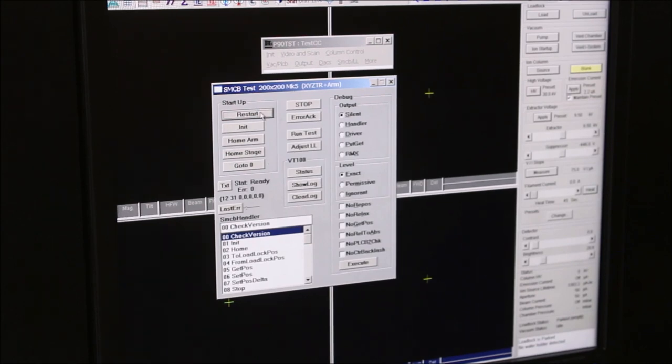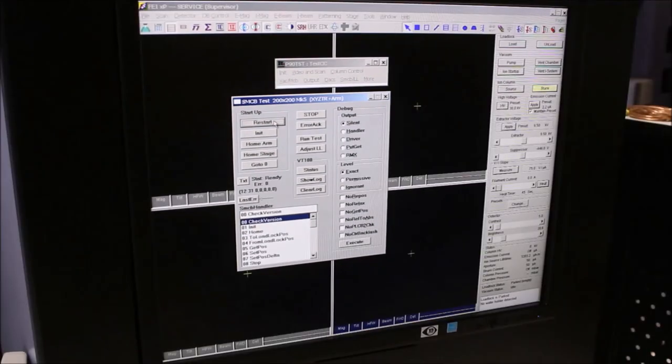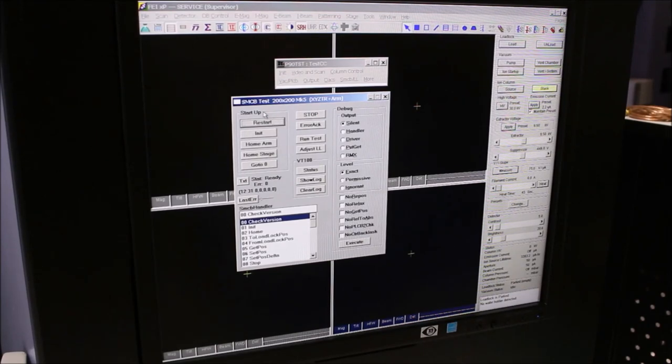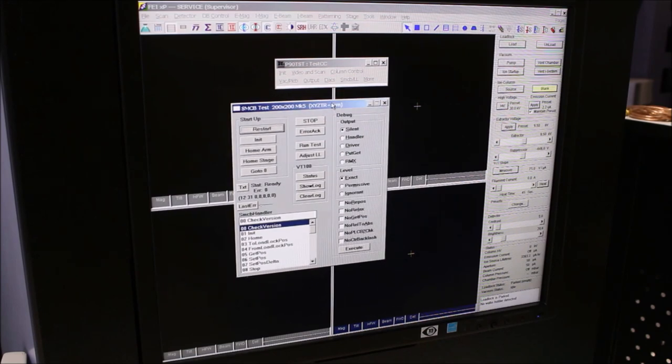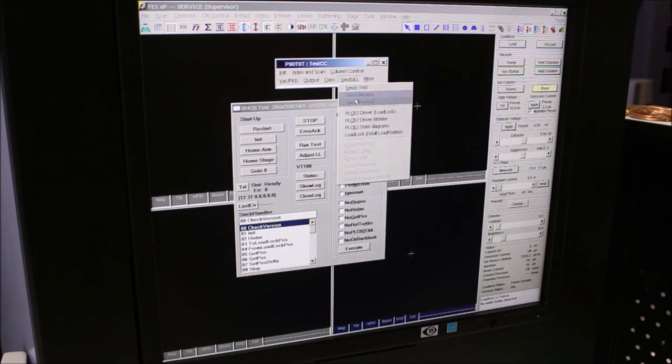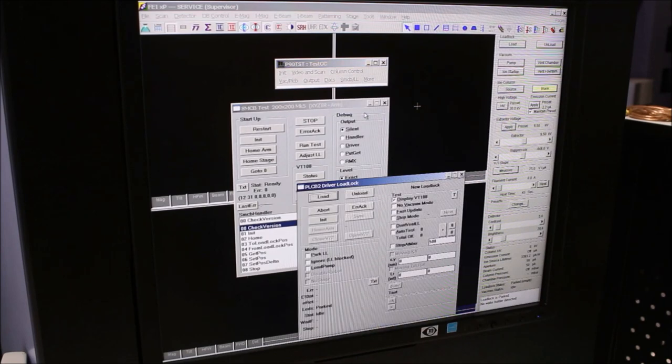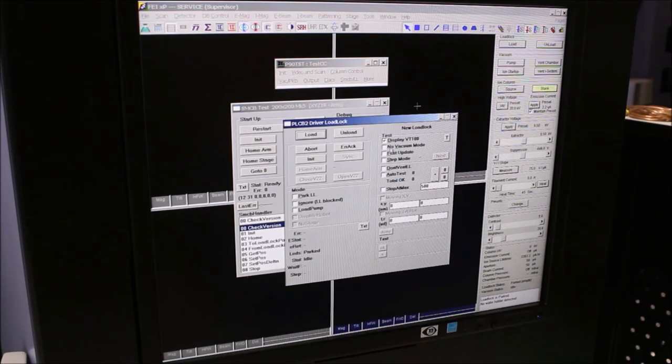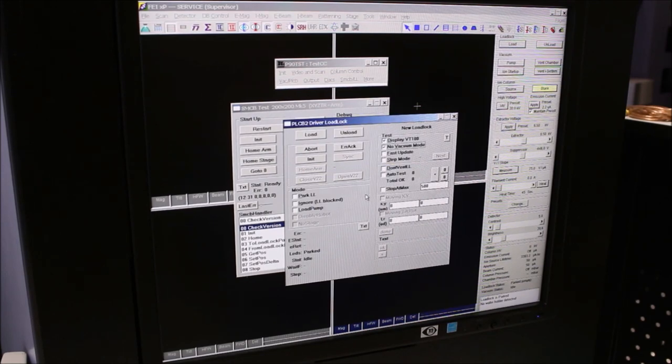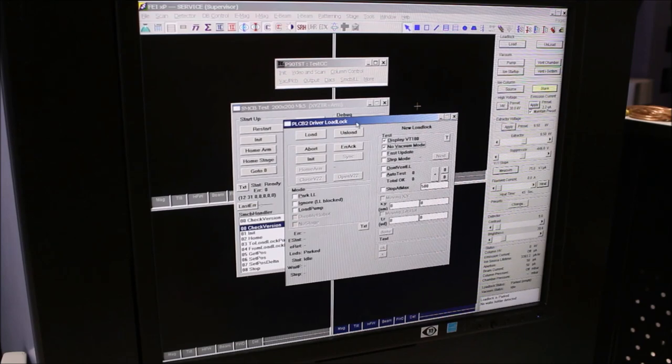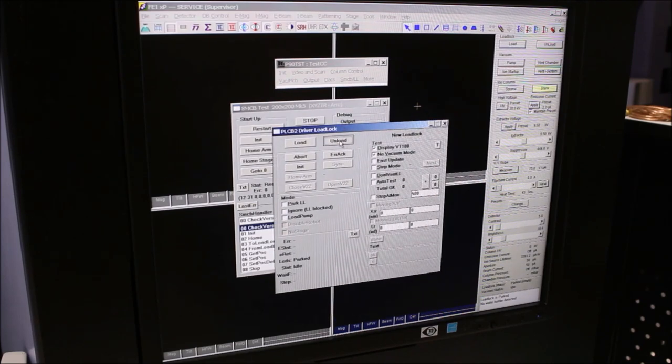Looks like everything's good so far. The next thing we want to do is make sure that the load lock and stage are aligned properly. Since I didn't really make any big changes to the stage, I'm pretty confident that I don't really need to do the adjustment. I'm just going to do a no vacuum mode transfer before I pump it down. I think that will allow us to confirm that everything's okay. I'm going to start with an unload.